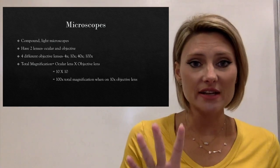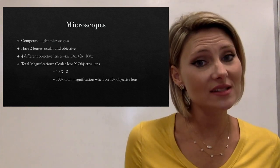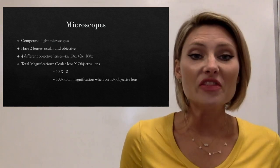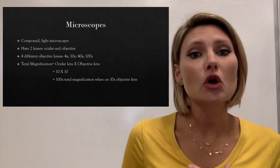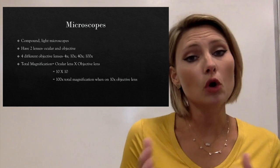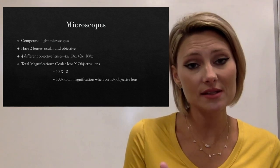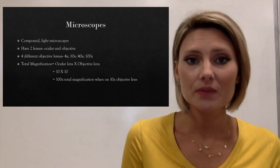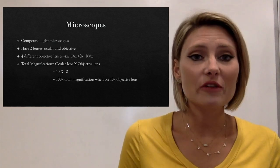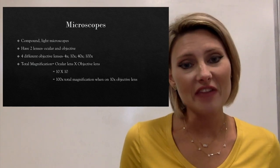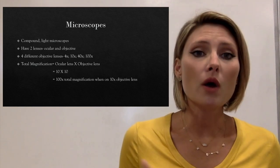The ocular lens on our microscopes is at a constant 10x magnification, and then we have our four different objective lenses. Depending on which objective lens you're on, that's going to change the total magnification. For example, if you are on the 10x objective lens — also known as low power — you would do 10 times 10, which gives you 100x total magnification.